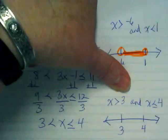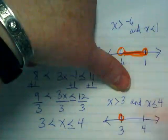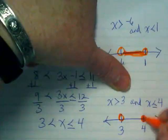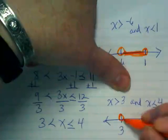3, 4, which one gets circled with an open? 3. Which one gets circled with a closed? 4. And where does the direction go? Together. Yeah, dude.